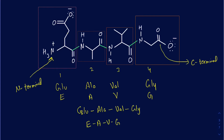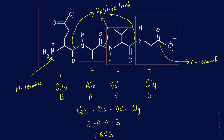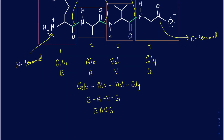Sometimes books just write it as EAVG without showing the bonds, meaning you have glutamate, alanine, valine, and glycine in that particular order. Order really matters when you're writing the sequence of these proteins. The bond that's going to be made between the carbonyl of the first amino acid and the amine of the second amino acid is called a peptide bond. It's very important to be able to recognize where your peptide bond is going to be — all the green bonds shown here are the peptide bonds.